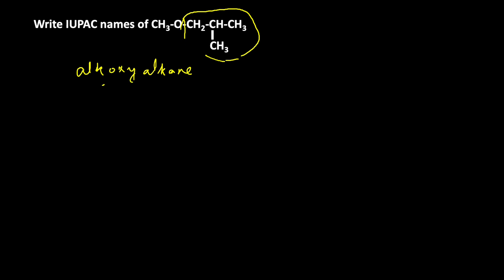To write the IUPAC name, we first need to identify the prefix, root, and suffix. The alkoxy group is considered as the prefix. CH3-O has only one carbon atom, so it is called methoxy.